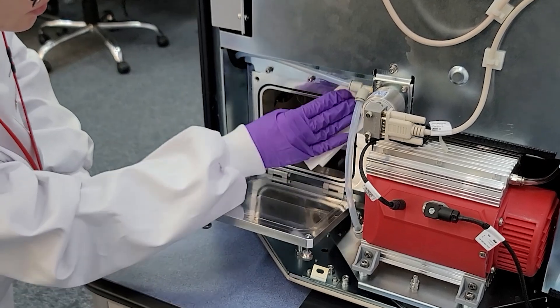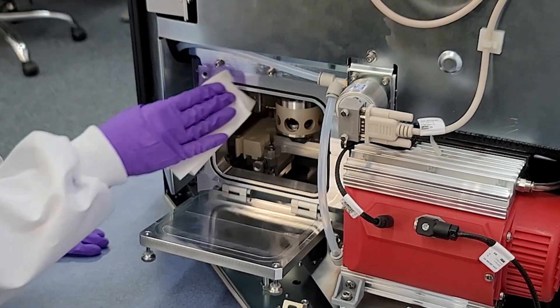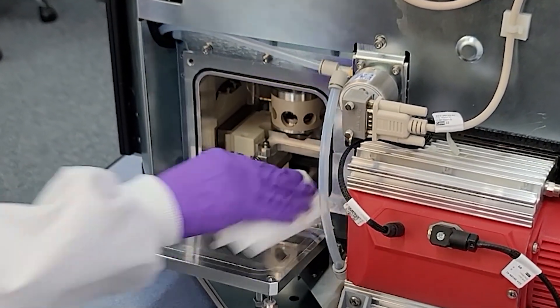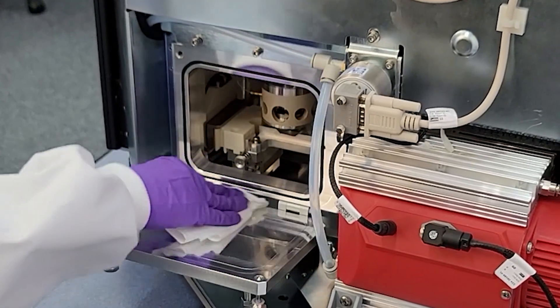Use the second lint free cloth to gently wipe the access panel, o-ring and sealing face to ensure there are no fibers or dust which may affect the vacuum.